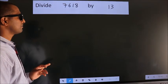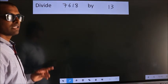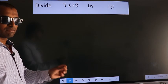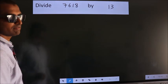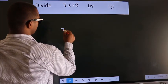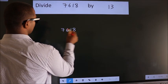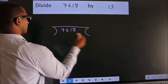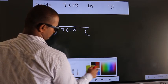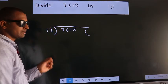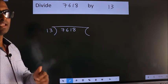Divide 7618 by 13. To do this division, we should frame it in this way. 7618 here, 13 here. This is your step 1. Next.